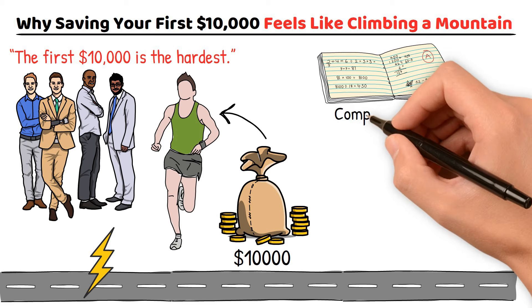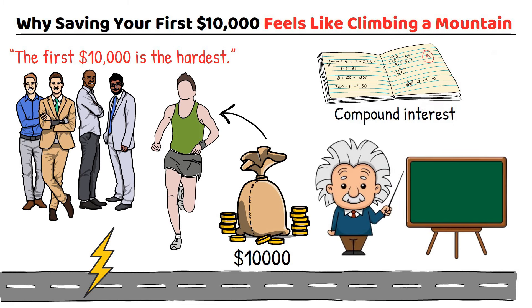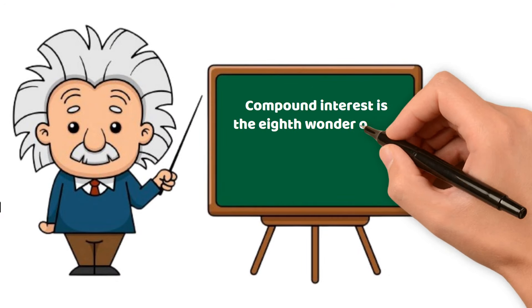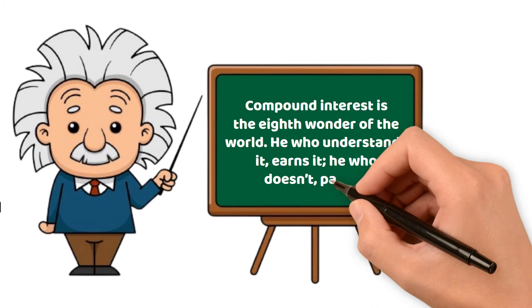Well, it all comes down to simple math, particularly something known as compound interest. Albert Einstein famously said, compound interest is the eighth wonder of the world. He who understands it, earns it. He who doesn't, pays it.